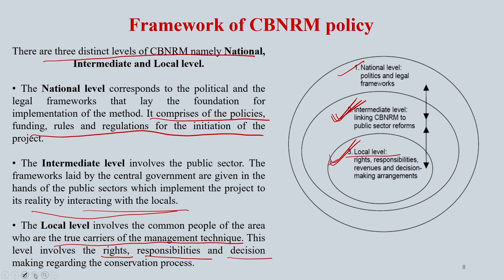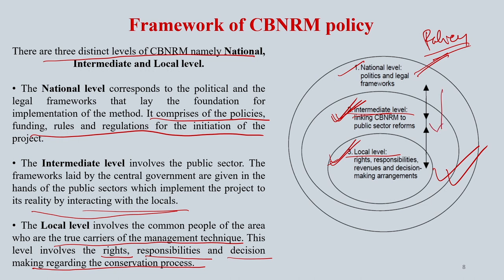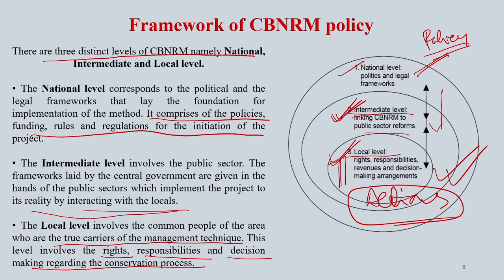The local level is where the action takes place. At the national level, policy and rules are developed. At the intermediate level, CBNRM works with stakeholders at the state level and tries to implement schemes proposed by central government with local people. Finally, at the local level, people work at the ground level for better management of their natural resources, ensuring their future sustainability, good life, and enhanced livelihoods.